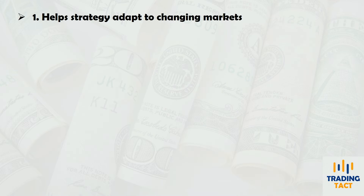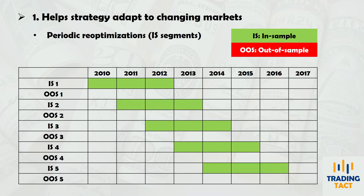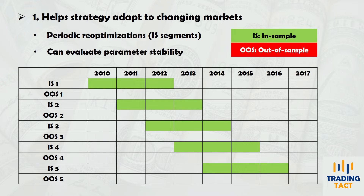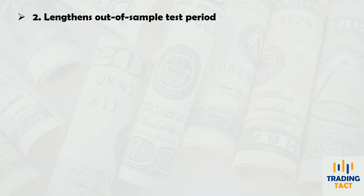Walk-forward optimization allows your strategy to adapt to prevailing market conditions through periodic re-optimizations. In this illustration, these re-optimizations occur yearly using the most recent historical data. Having multiple optimizations also gives you a glimpse into your strategy's parameter stability, which I will demonstrate later on. More importantly, through walk-forward optimization, you can lengthen the period of out-of-sample testing without sacrificing in-sample data used for parameter optimization.